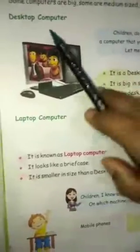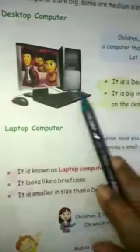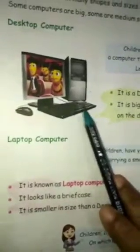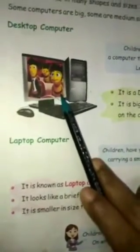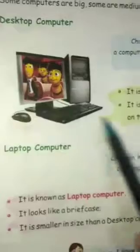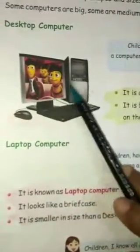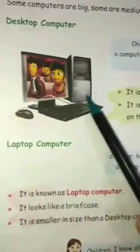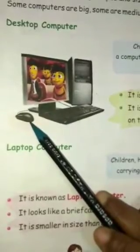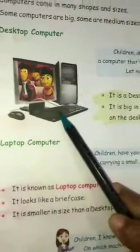The first type is the desktop computer. This is a desktop computer — it is big in size and can be kept on the desk. Its parts are monitor, CPU cabinet, keyboard, and mouse, and these are all kept on a desk.